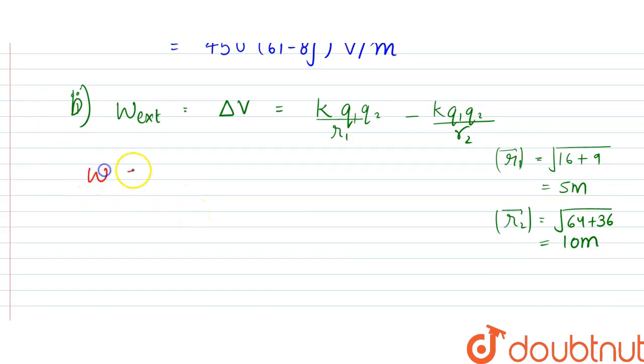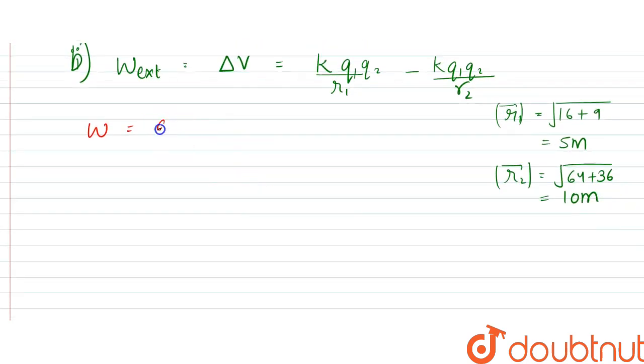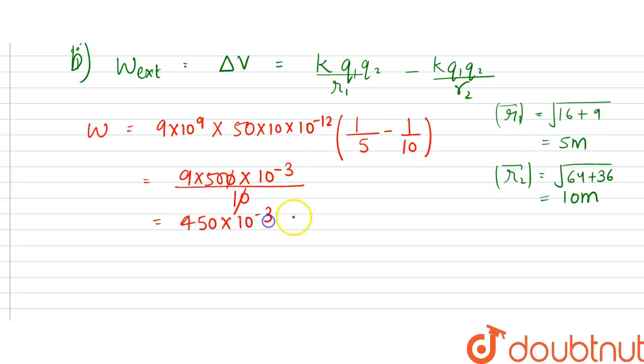From here, work done can be written as, and the value of charge here is one is 50 microcoulomb and another is 10 microcoulomb. So it would be 9 into 10 to the power 9, K into Q1Q2, that is 50 into 10 into 10 to the power 12 would be outside into 1 by 5 minus 1 by 10, which is equal to 9 into 500 into 10 to the power minus 3 divided by 10. So this and this gets cancelled. It would be 450 into 10 to the power minus 3 joules, which is equal to 0.45 joules. That is the answer. Thank you.